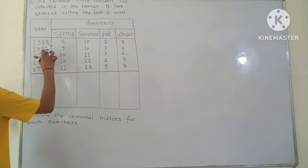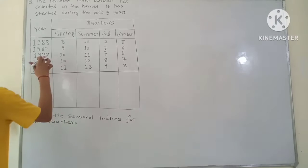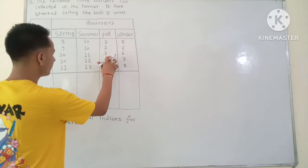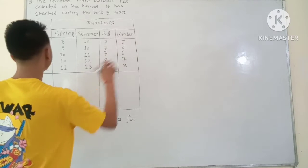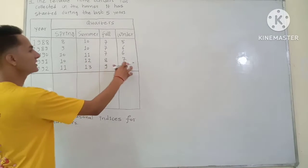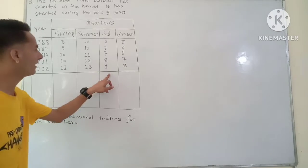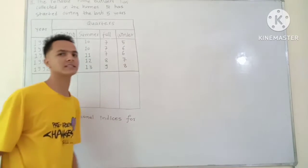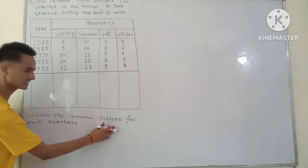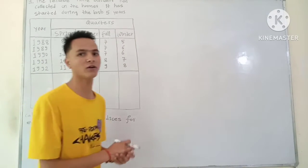The data is: Year 1989 — Spring 9, Summer 10, Fall 7, Winter 6. Year 1990 — Spring 10, Summer 11, Fall 7, Winter 6. Year 1991 — Spring 10, Summer 12, Fall 8, Winter 7. Year 1992 — Summer 13, Fall 9, Winter 8. The question asks us to calculate the seasonal indices for each quarter.